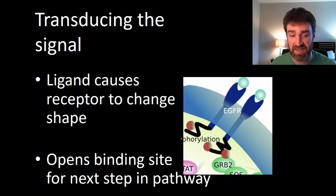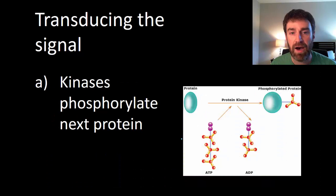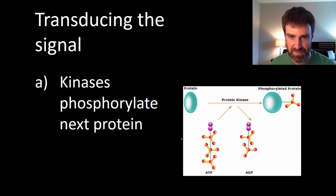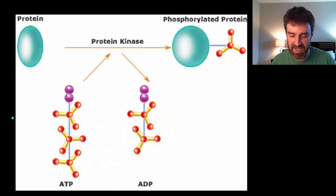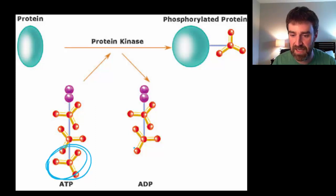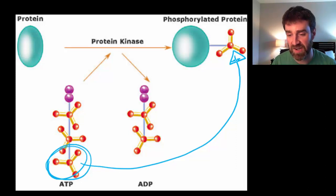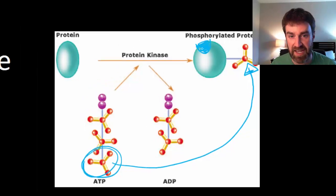I just want you to be able to describe some of these activation mechanisms. One example is that a kinase gets activated by a previous step, and a kinase activates the next protein in the pathway by phosphorylating it — transferring a phosphate from ATP to that next protein. Maybe the kinase's binding site gets opened, the next protein fits in, and by phosphorylating its allosteric site, the protein changes shape to open a new binding site for the next step.